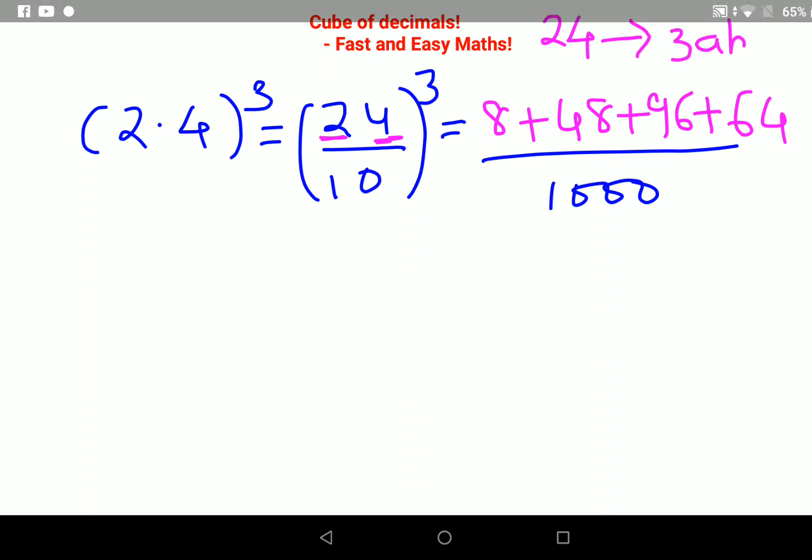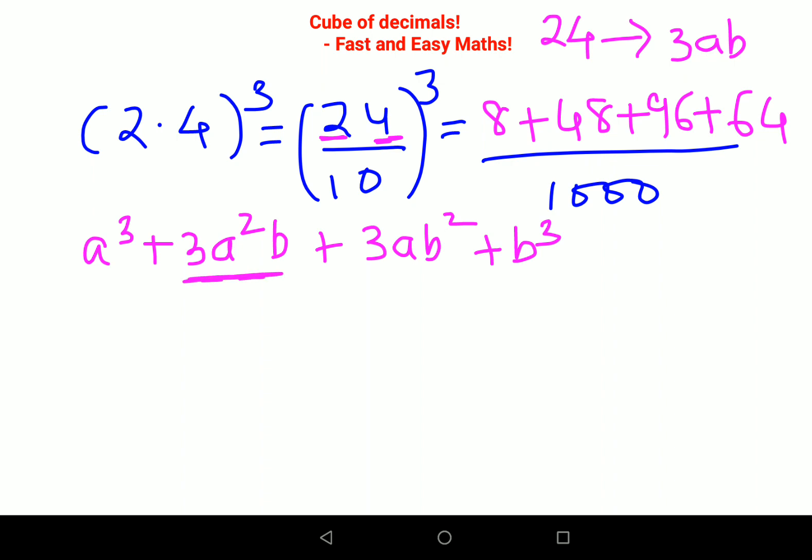For those who did not understand, this is 3ab, and your entire cube goes like this: a cube plus 3a square b plus 3ab square plus b cube. That's why I first found 3ab, then multiplied the first digit to get 3a square b, then multiplied the second digit to get 3ab square.